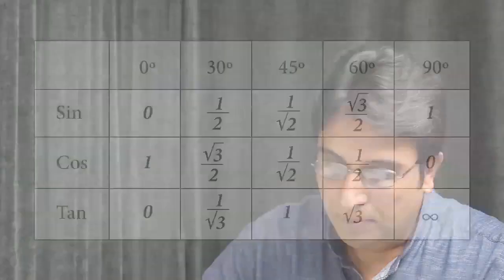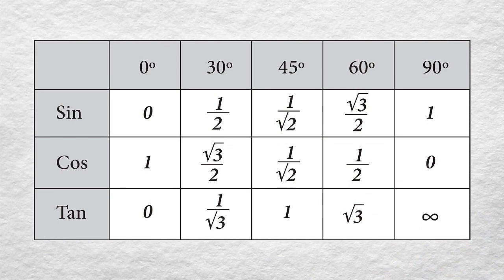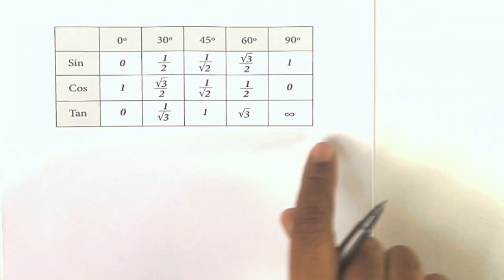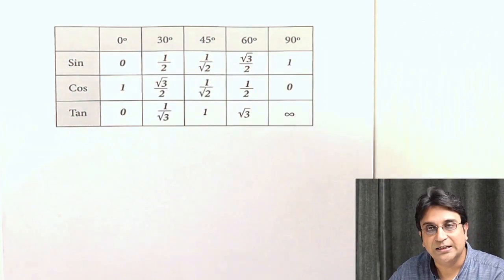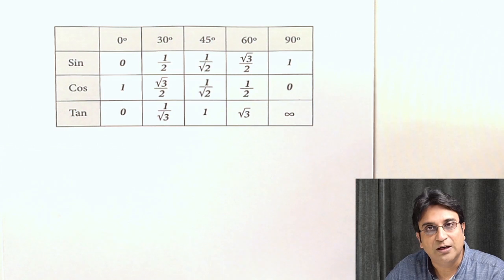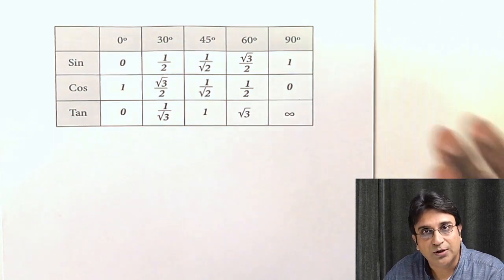So the first thing you need to do in order to master the topic is to master the table here. All right, so this is called the standard value table. You've got 0, 30, 45, 60, 90 degrees. There are only these five values, though of course there can be so many values between 0 and 90.